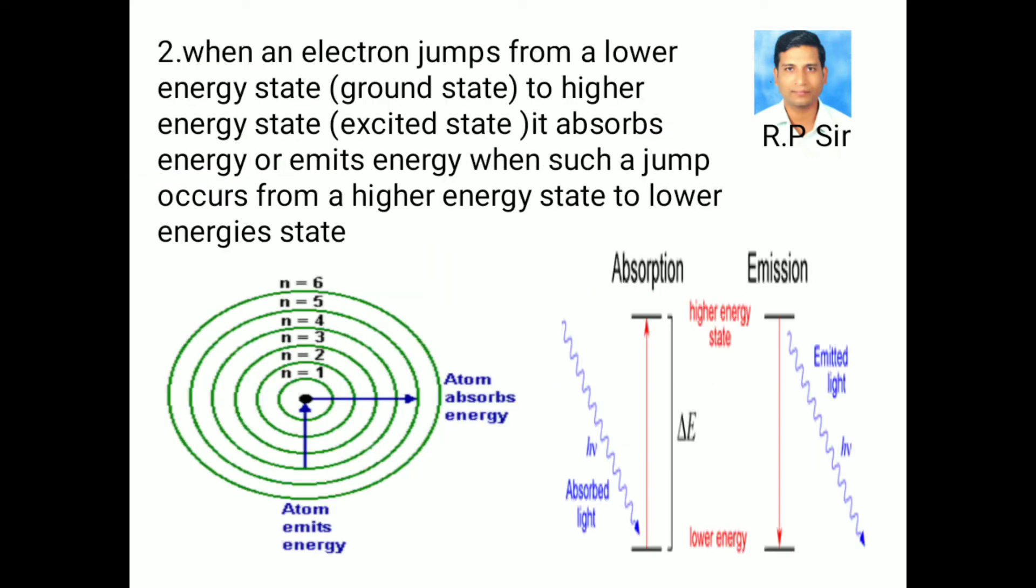When an electron jumps from a lower energy state, that is ground state, to higher energy state, that is excited state, it absorbs energy, or emits energy when such a jump occurs from a higher energy state to lower energy state.